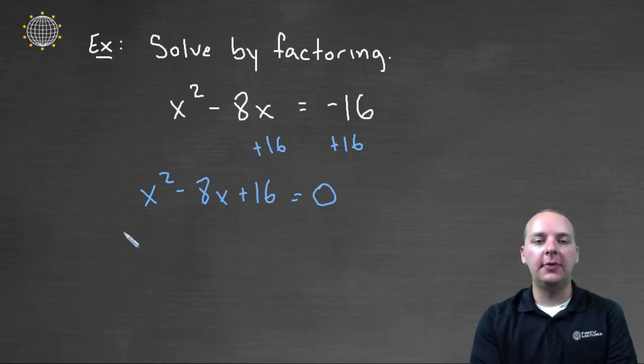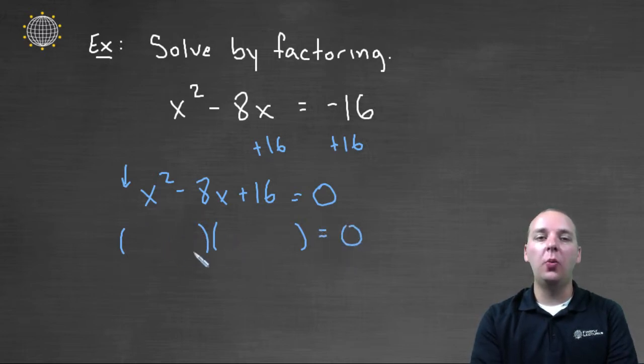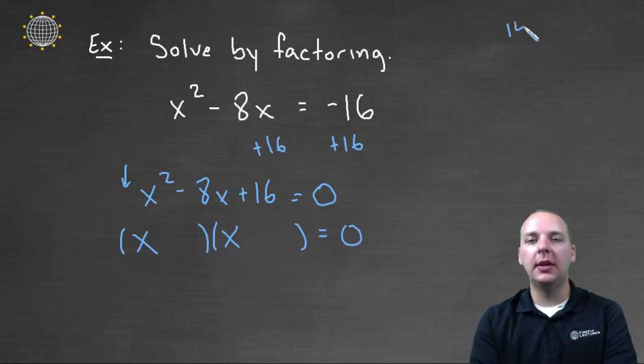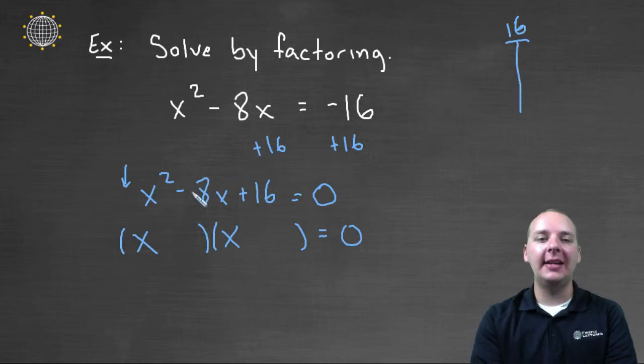So we'll try to factor the left hand side. Usually if it's small like this, especially if the leading coefficient is one, I find it easiest just to do trial and error. Just try to think about what will FOIL to give you this as an answer. To get x squared you'd have to have x times x. And then for the last two places you're looking for something that will multiply to sixteen and add to negative eight.